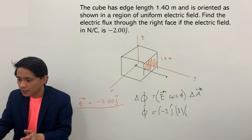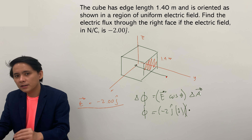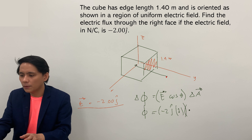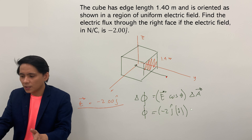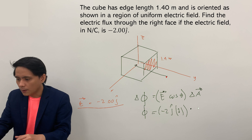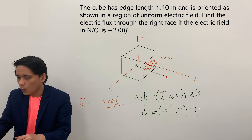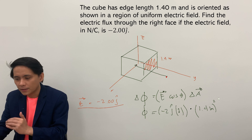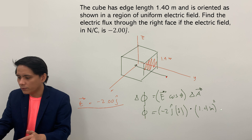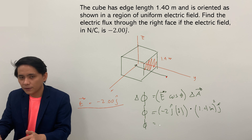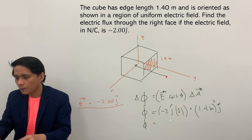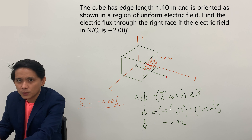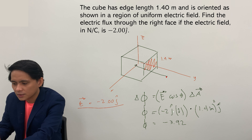We will use the dot product here. Since the area is given numerically, we go directly to solving for the area of this face. The area of this face is equivalent to 1.4 meters squared. The face is facing the y direction, so the unit vector is j hat. Doing the dot product, j hat dot j hat equals 1.